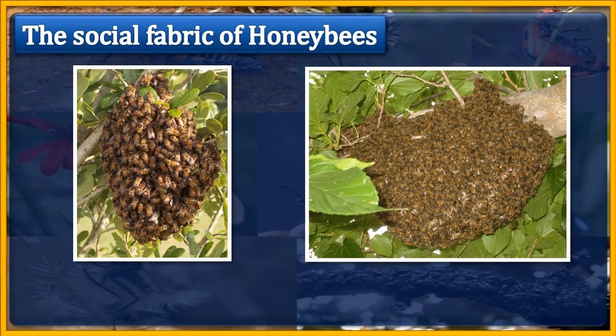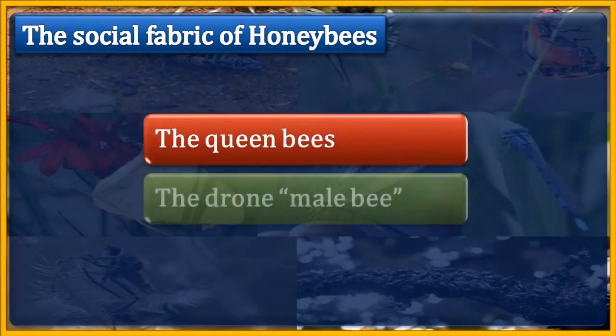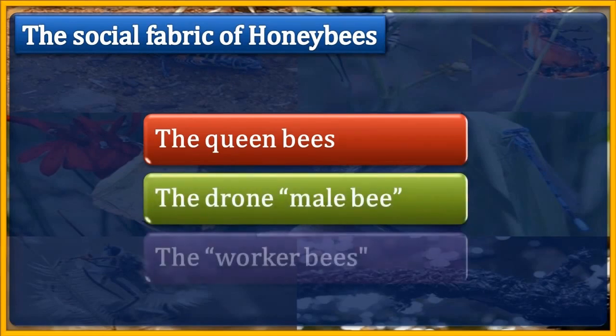The colony of honeybees consists of three types of bees: the queen bee, the drone or male bee, and the worker bees.